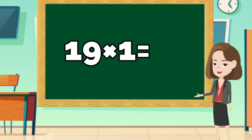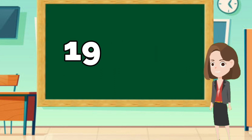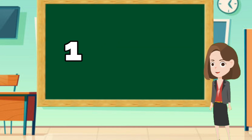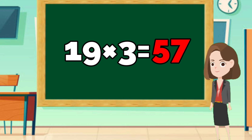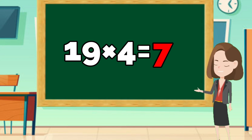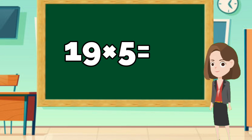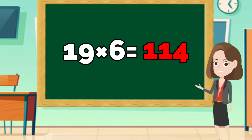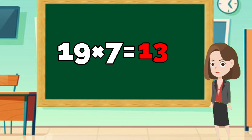19 1's are 19. 19 2's are 38. 19 3's are 57. 19 4's are 76. 19 5's are 95. 19 6's are 114. 19 7's are 133.